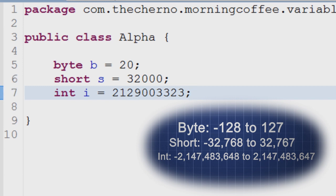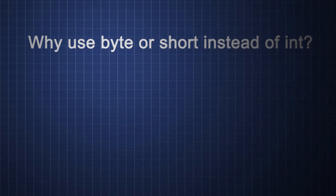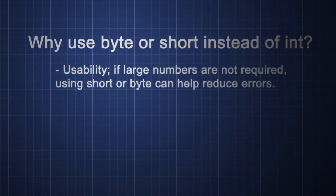So all of this begs the question, if I can use int why should I use byte or short? Two reasons. First one is usability. If you know that you don't need a variable exceeding say 100, you might as well use a byte as it simply won't store anything much more than 100.